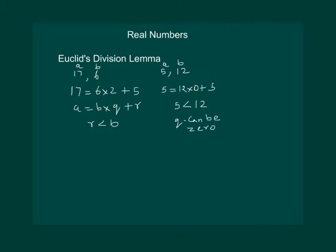Look at another pair. Here, say we take 20 and 4. a is 20, b is 4, so 20 equal to 4 into 5 plus 0. This shows that r can take value 0.